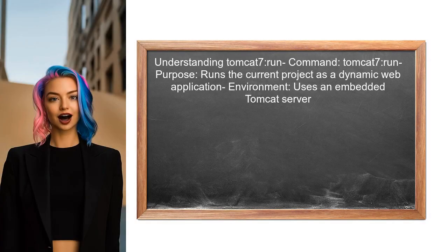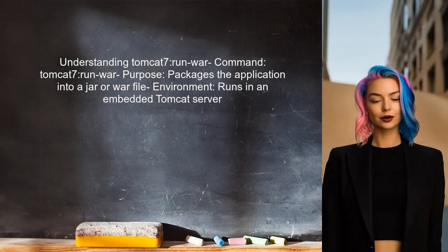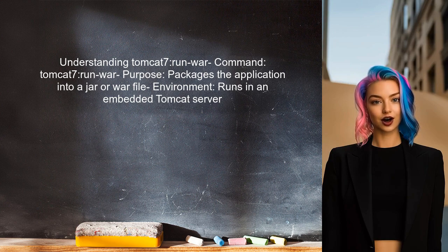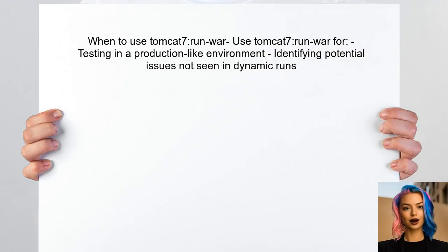To understand when to use Tomcat 7 Run, let's first clarify what it does. This command runs the current project as a dynamic web application using an embedded Tomcat server. On the other hand, Tomcat 7 Run War packages the application into a JAR or WAR file before running it. This is useful for testing the application in a production-like environment. Use Tomcat 7 Run War when you want to test the application as it would run in production, helping identify issues that may not appear when running the application dynamically.